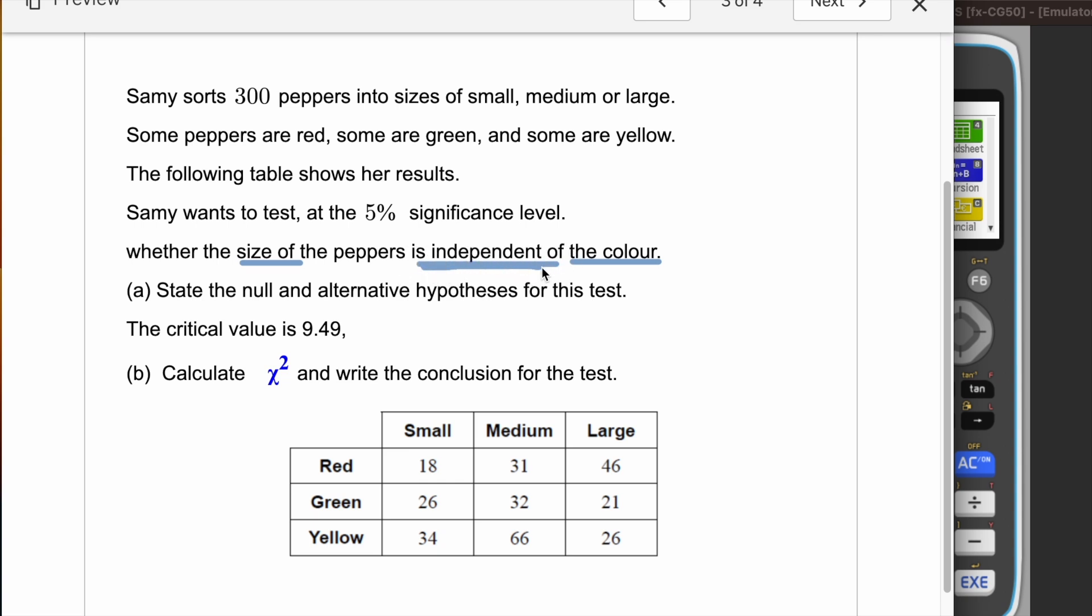Sammy wants to test at 5% significance level whether the size and the color are independent or not. If our results probability is more than 5%, we are going to accept this. Otherwise, we are going to say they are dependent, they are not independent.